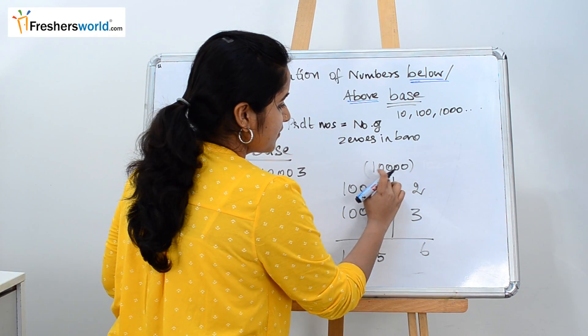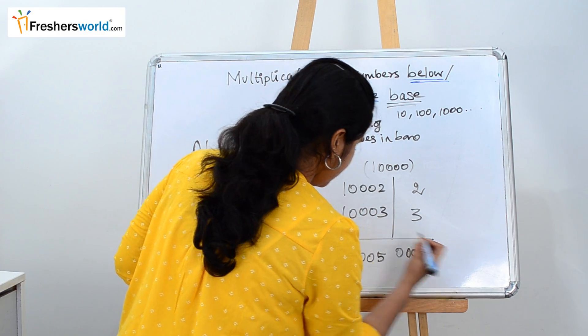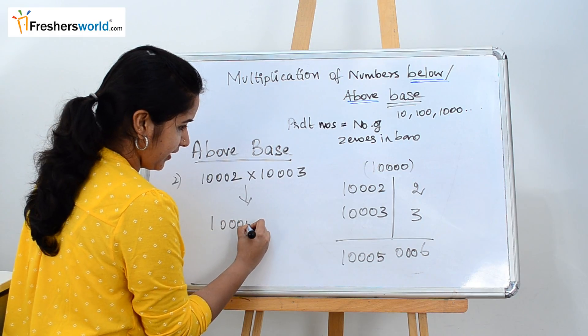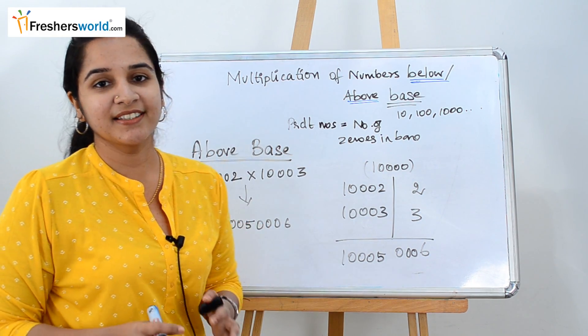3 times 2 is 6. But number of zeros here is 4. The digit is 1. So put 3 zeros here. So the answer for it is 1005006. It is as simple as that.